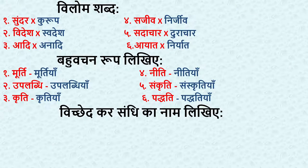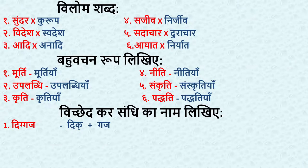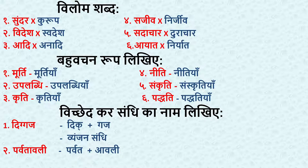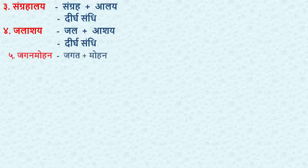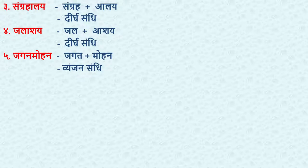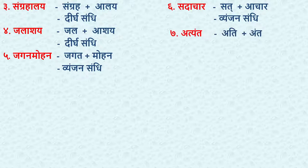The next main topic is Vichhedkar Sandhi ka Naam Likhiye — split the word and write the name of the Sandhi. Diggaj splits into Digg plus Gaj — Vyajan Sandhi. Parvatavali splits into Parvat plus Aavali — Dheerga Sandhi. Sangrahalai splits into Sangrah plus Aalai — Dheerga Sandhi. Jagan Mohan splits into Jagat plus Mohan — Vyajan Sandhi. Sadachar splits into Sat plus Aachar — Vyajan Sandhi. Atiyanth splits into Ati plus Ant — Yan Sandhi.